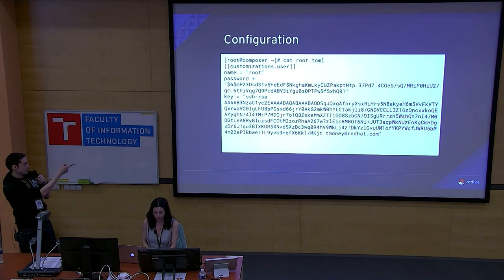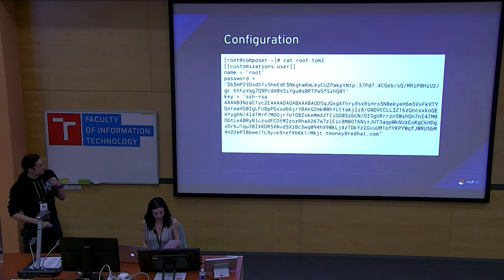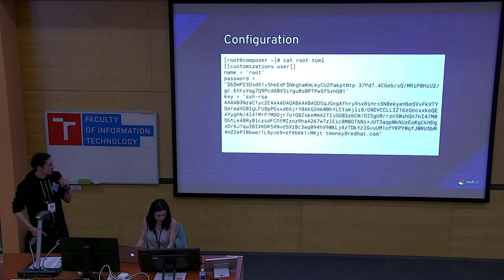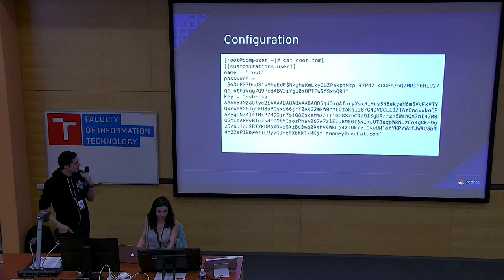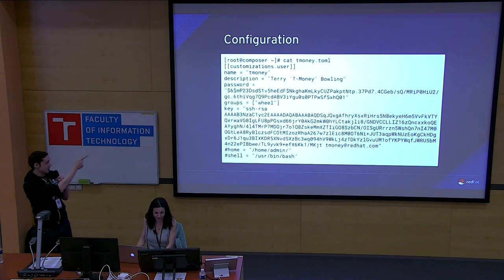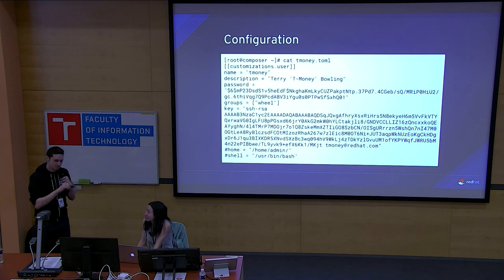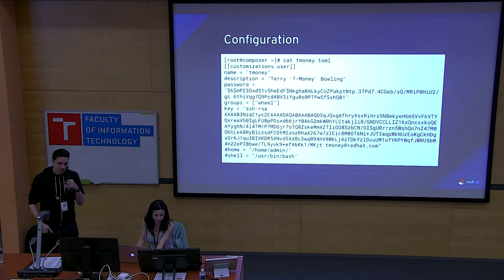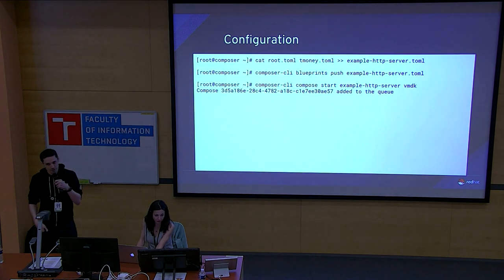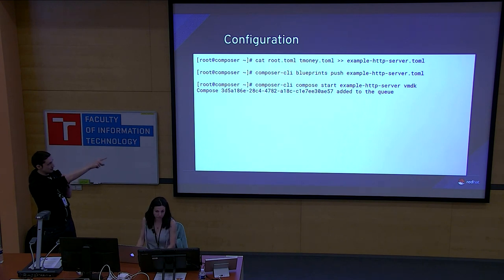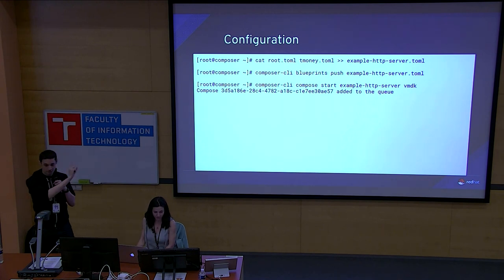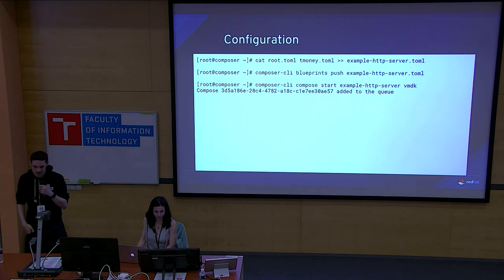We added a root user — set a password and a key for Terry T-Money — and just put his key in there so that T-Money can get into his systems. We've got the root one and a user so that you've got a regular user on the system. There will be UI for this soon — there isn't right now. We're trying to figure out what sorts of customizations are the most important, so we started with the most obvious ones. It's just a matter of taking those little snippets, adding them to the blueprint, pushing the blueprint back into the server, and running that command.